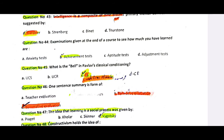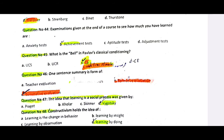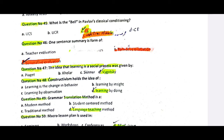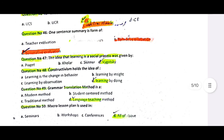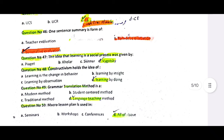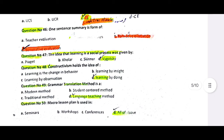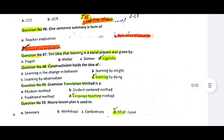A one-sentence summary is a form of summative evaluation. The idea that learning is a social process — constructivism holds the idea of learning by doing, as it is a modern theory focused on active learning. The grammar translation method is a traditional language teaching method; one is the direct method and one is the grammar translation method.